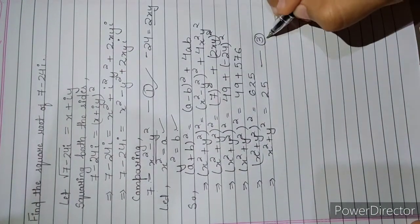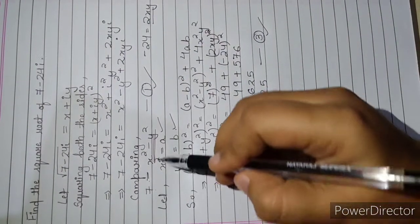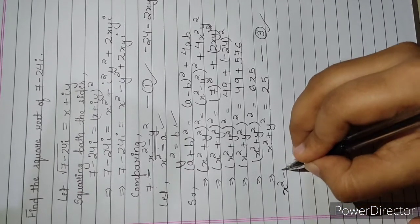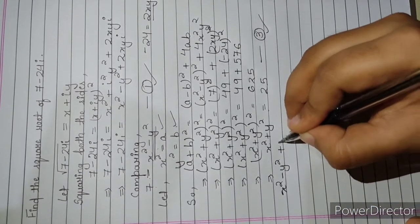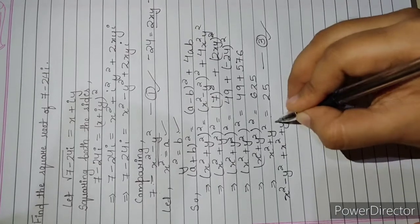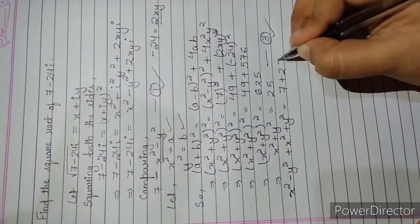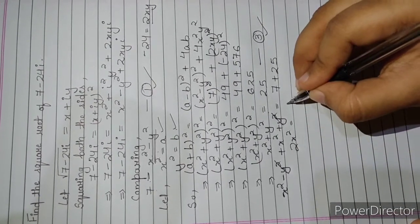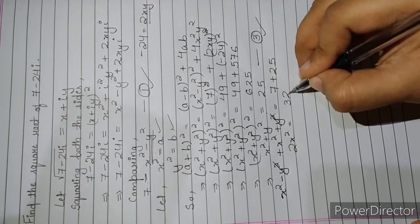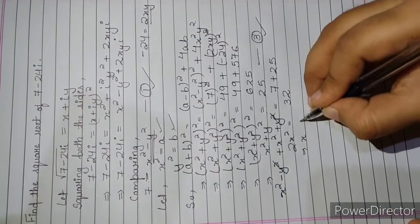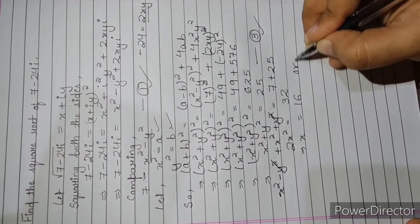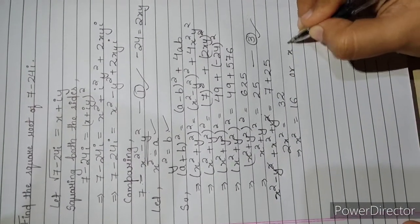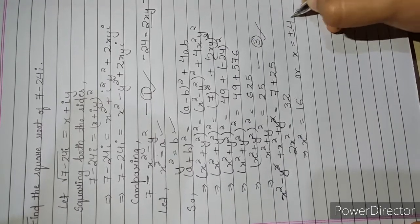Adding equations 1 and 3: x squared minus y squared plus x squared plus y squared equals 7 plus 25. The y squared terms cancel, giving 2x squared equals 32, so x squared equals 16, meaning x equals plus or minus 4.